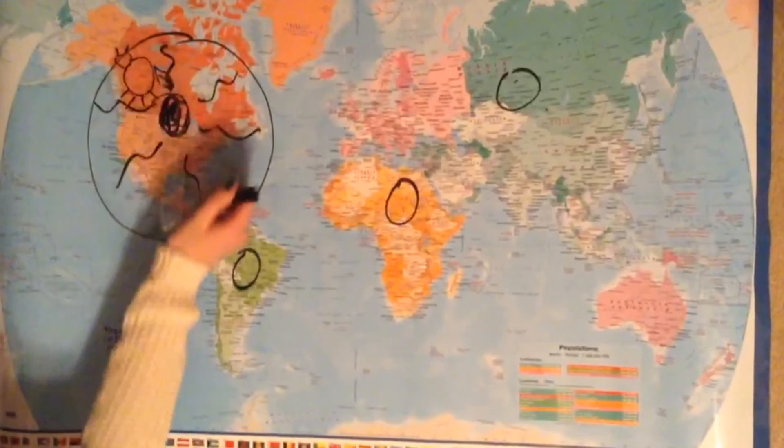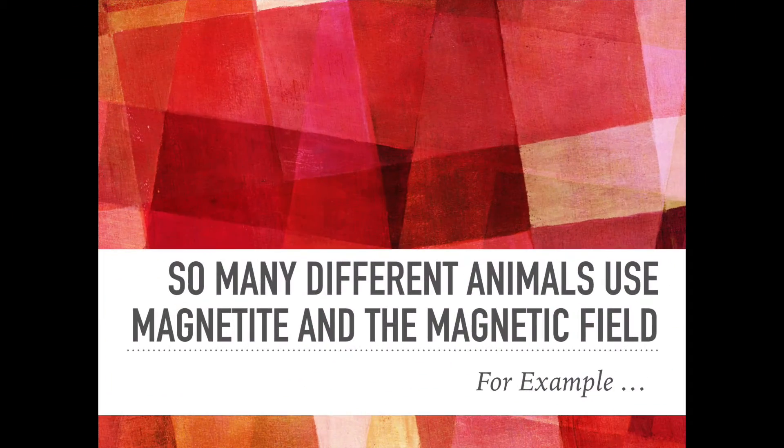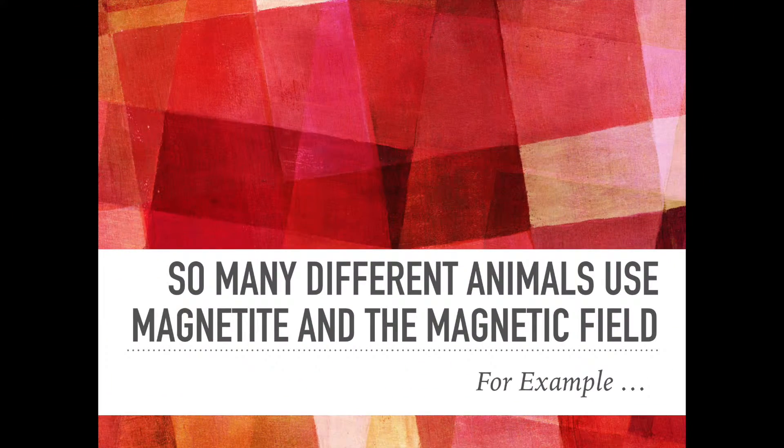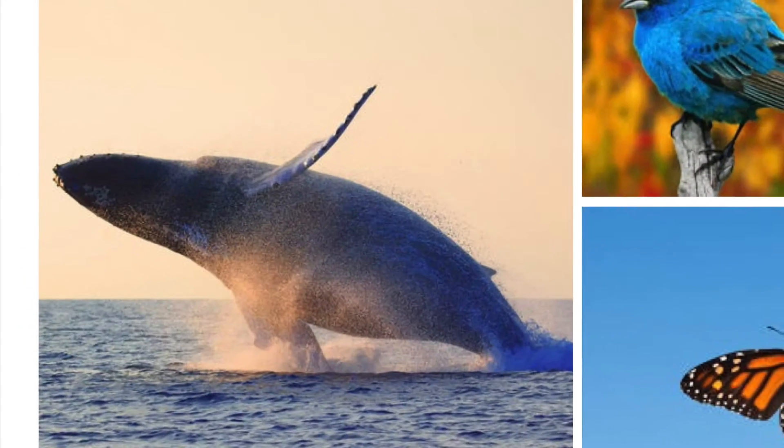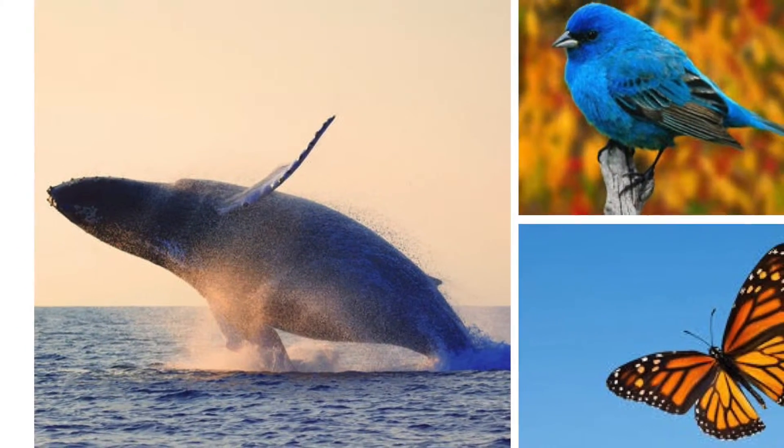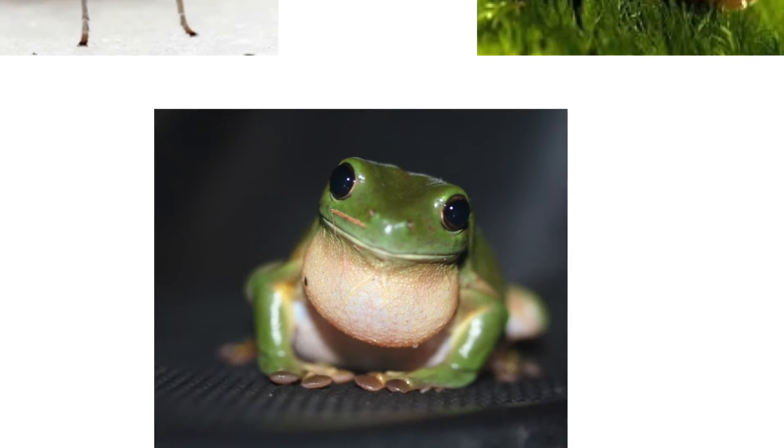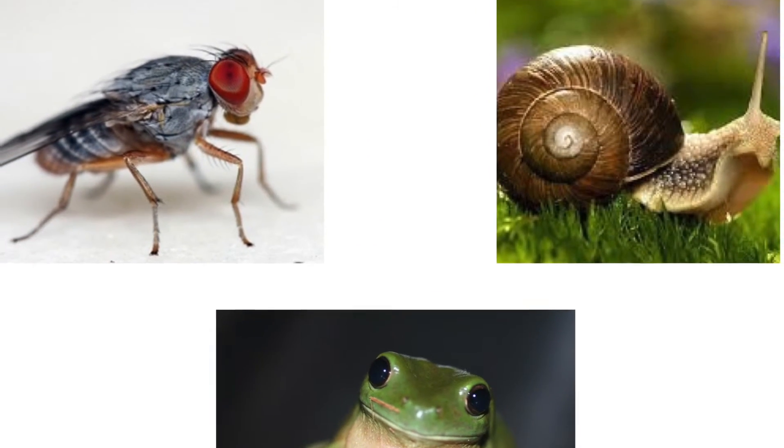So many different animals use the magnetic field, for example: sea turtles, bumblebees, fish, whales, birds, butterflies, fruit flies, snails, frogs, and so many more.